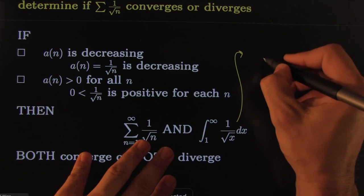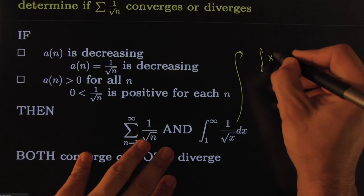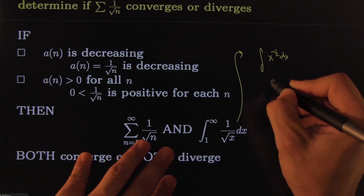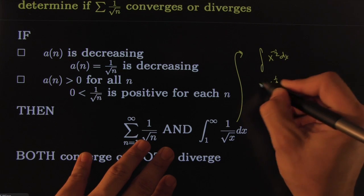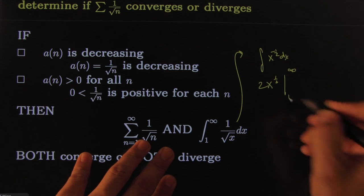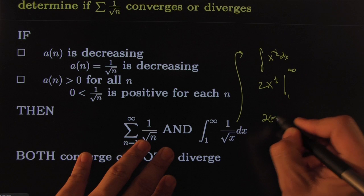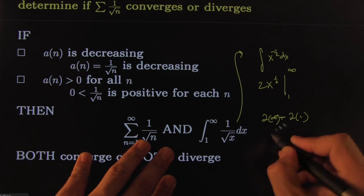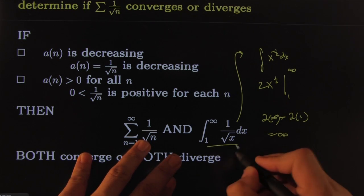Square root x to the negative 1/2 dx becomes x^(1/2) times 2, going from infinity to 1. That becomes 2 times infinity minus 2 times 1, which of course is infinite.